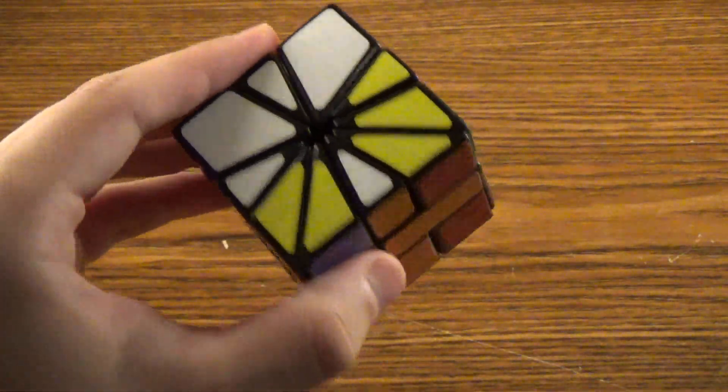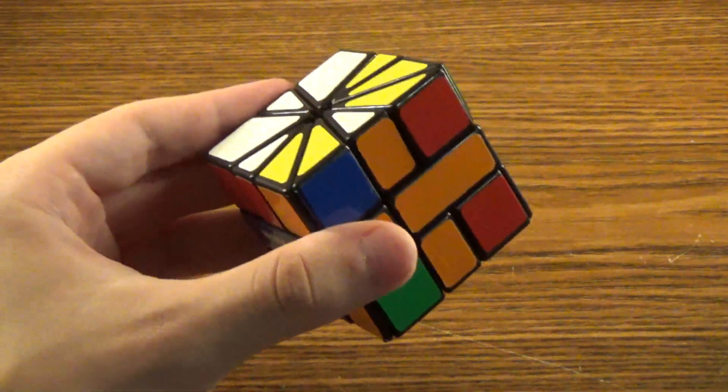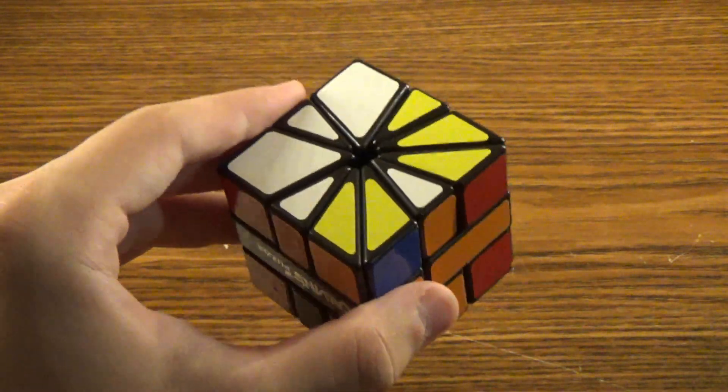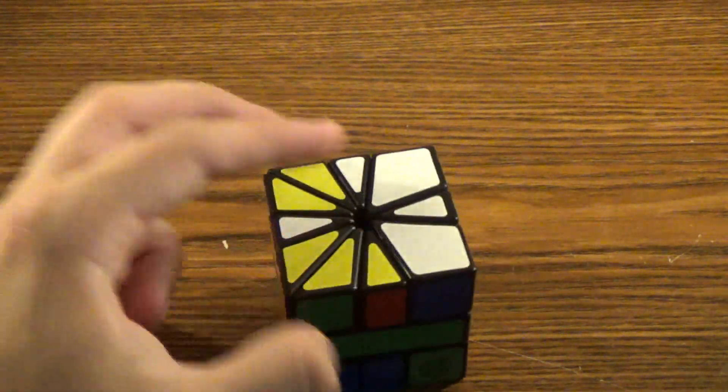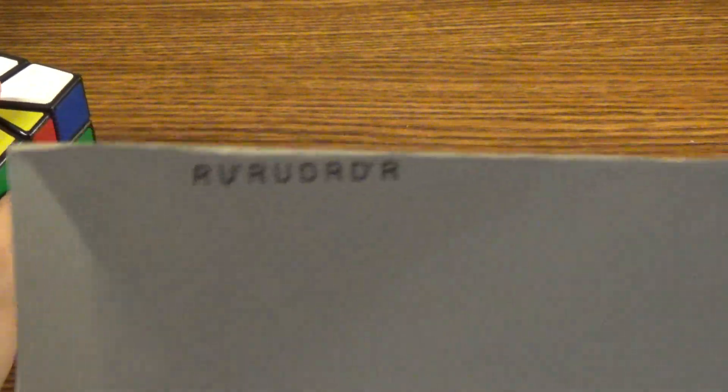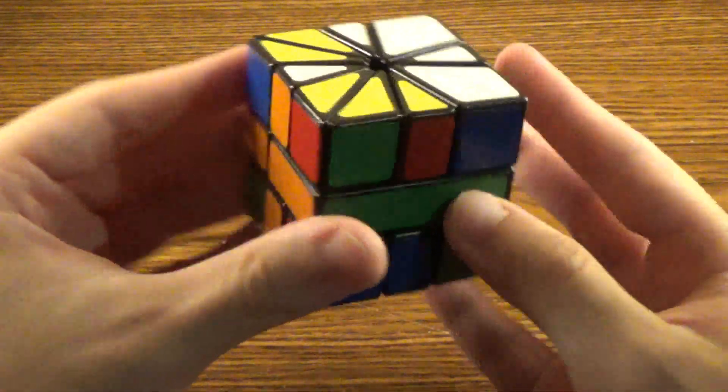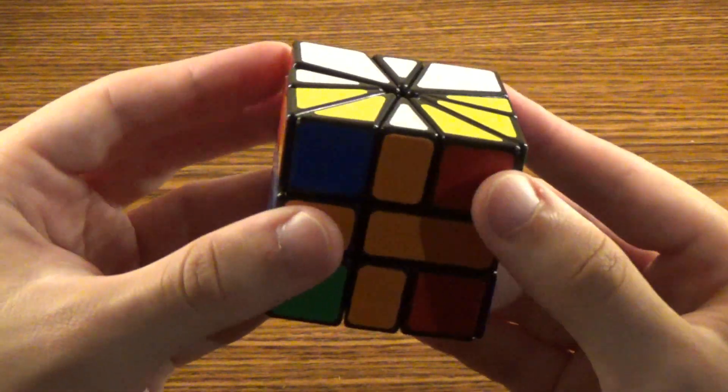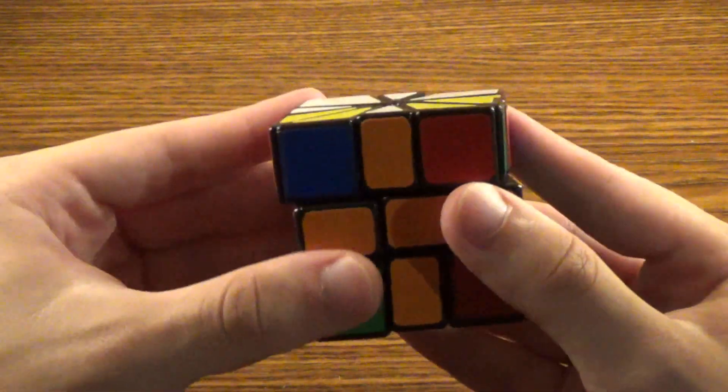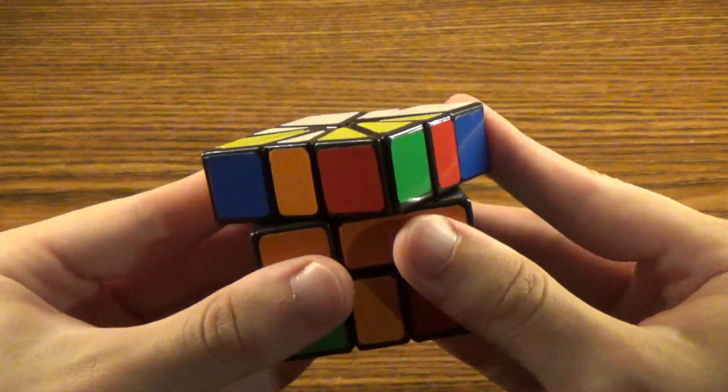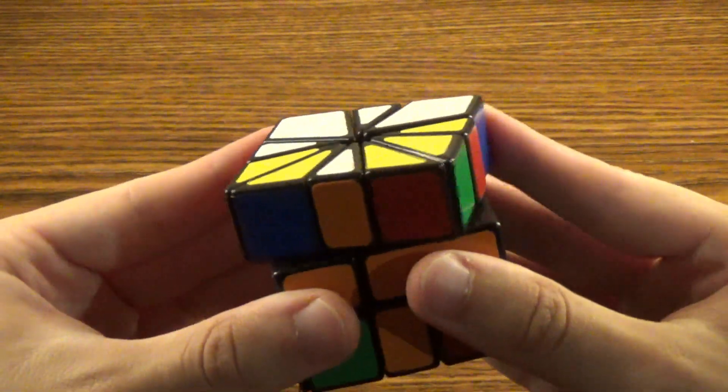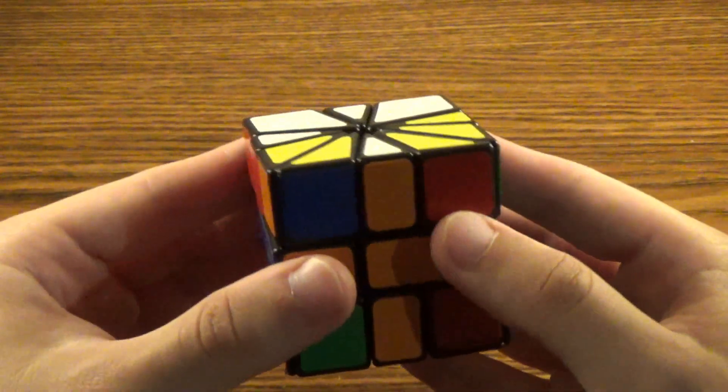Now all of these corners being correct is good because it means we don't have to fix the Square-2 type parities that can occur using a Square-2 algorithm that I've actually written down here in case I got the parity. I got the algorithm from the webpage of someone called Jaap. I'm not even going to try to pronounce his last name. Here's his full name. I'll put a link to his website in the description so that you can read about his Square-2 method for yourself.